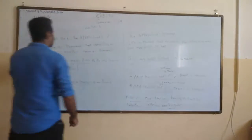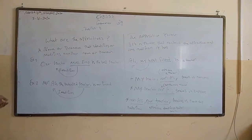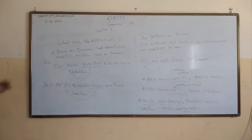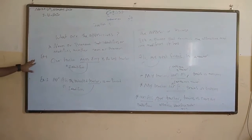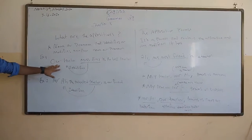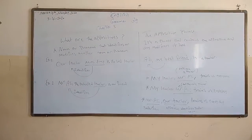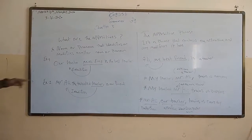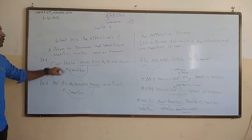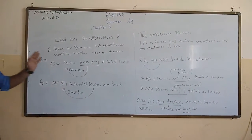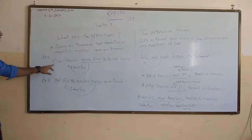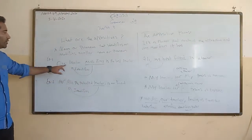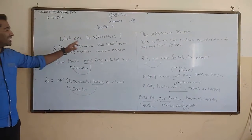Again, what is an appositive? An appositive is a noun or pronoun that identifies another noun or pronoun. For example, 'Our teacher, Miss Annie' — here 'Miss Annie' is the appositive and it identifies 'our teacher.' Miss Annie is another noun that identifies another noun, that's why it's an appositive.